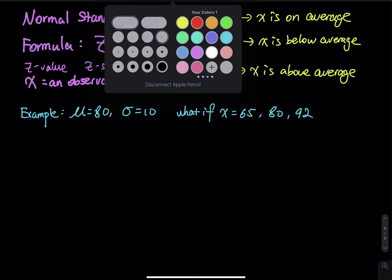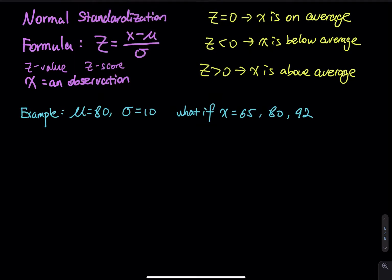So let's do a quick standardization. So we have mu equals 80, and then sigma equals 10. So let's say on a test, the mean is 80, standard deviation is 10.